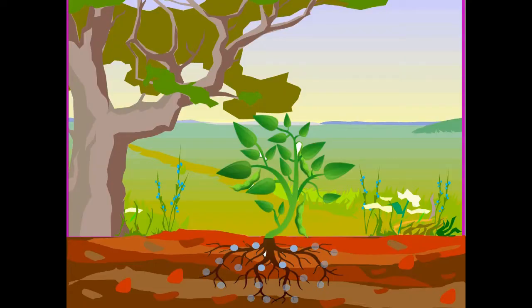Friends, like us, plants also require a lot of nitrogen to make proteins. So, they absorb nitrogen continuously from the soil. Due to this, nitrogen in the soil becomes deficient.